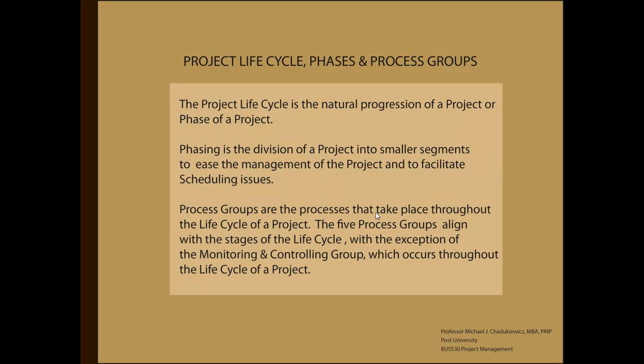Let's review briefly what we have covered in this lesson. Project life cycle is the natural progression of a project or phase of a project. Phasing is the division of a project into smaller segments to ease the management of the project and to facilitate scheduling issues. Process groups are the processes that take place throughout the life cycle of a project. The five process groups align with the stages of the life cycle, with the exception of monitoring and controlling, which occurs throughout the life cycle of a project.